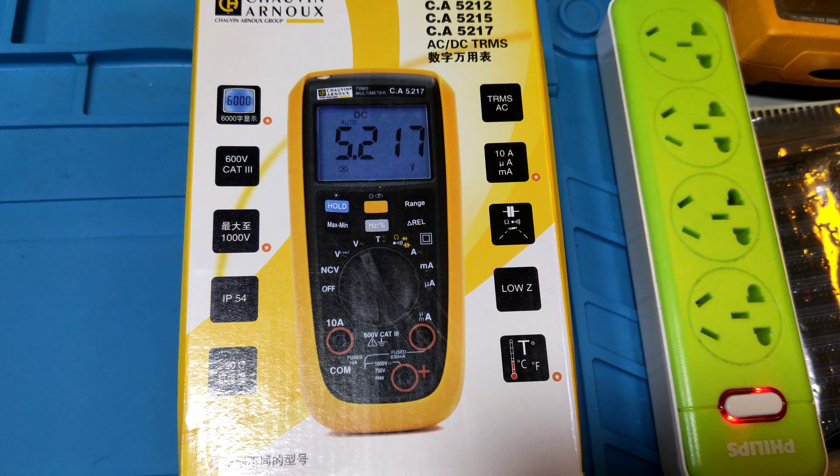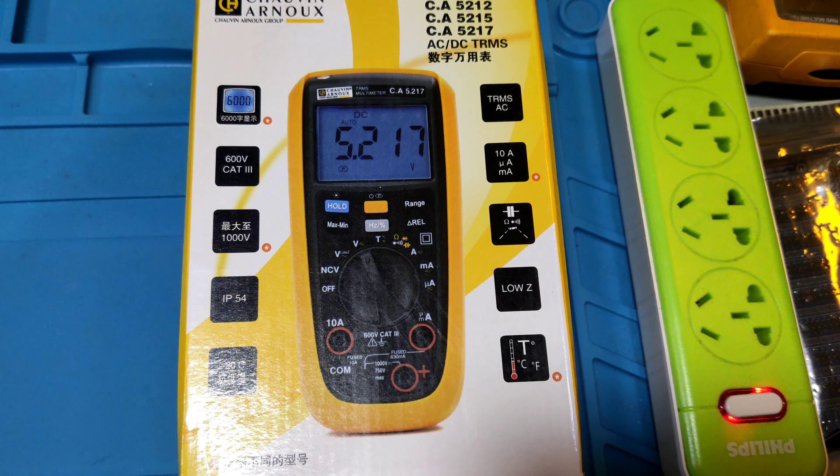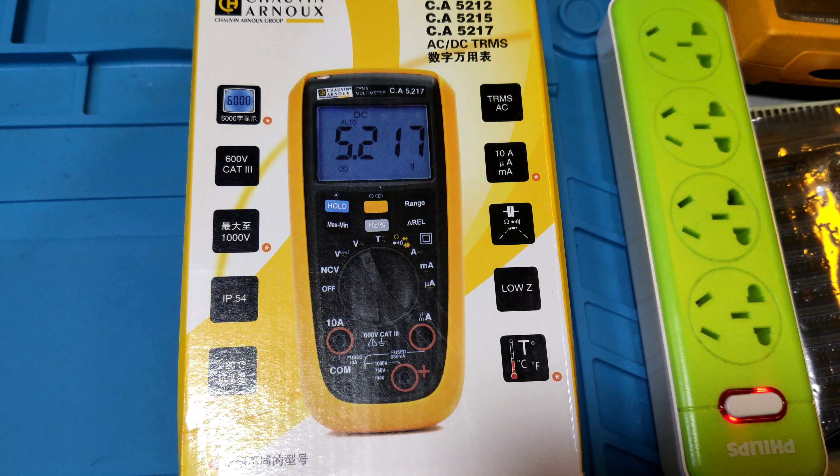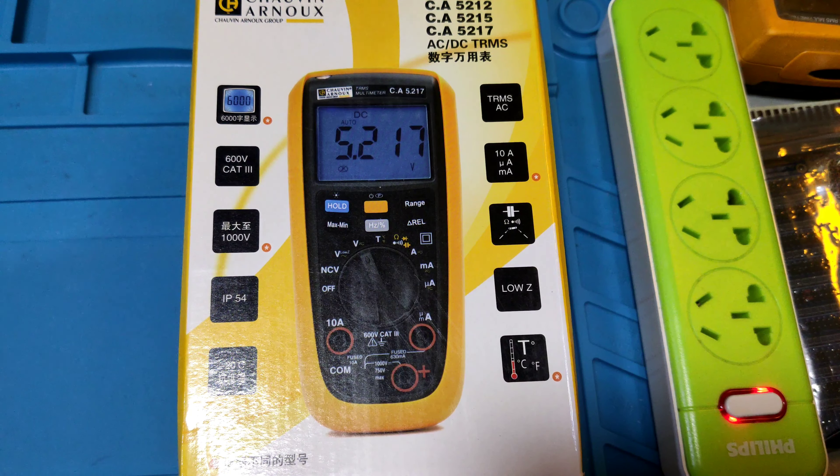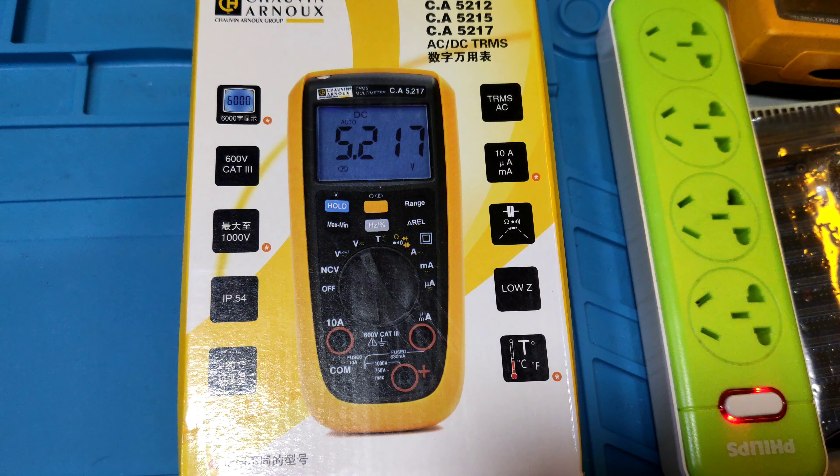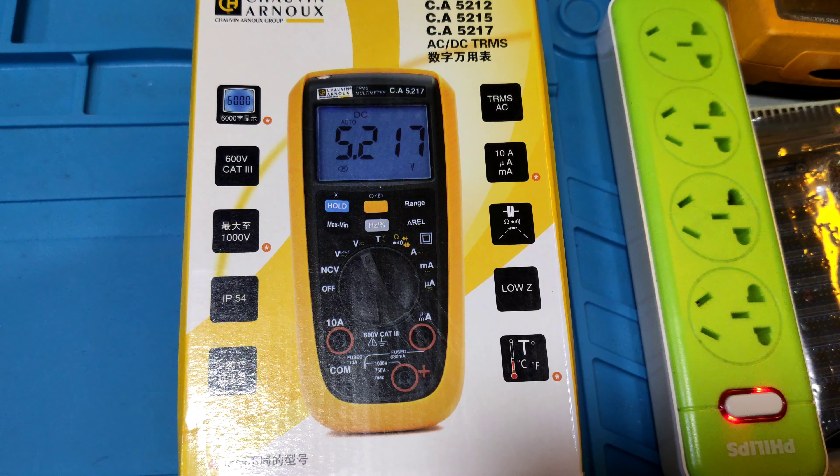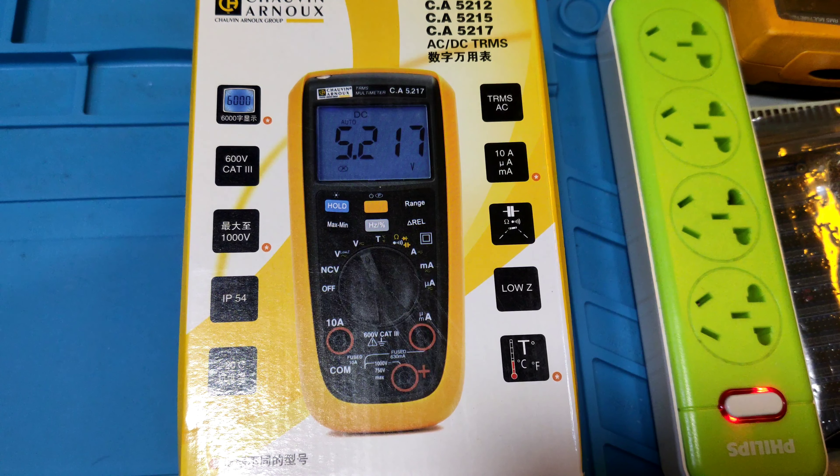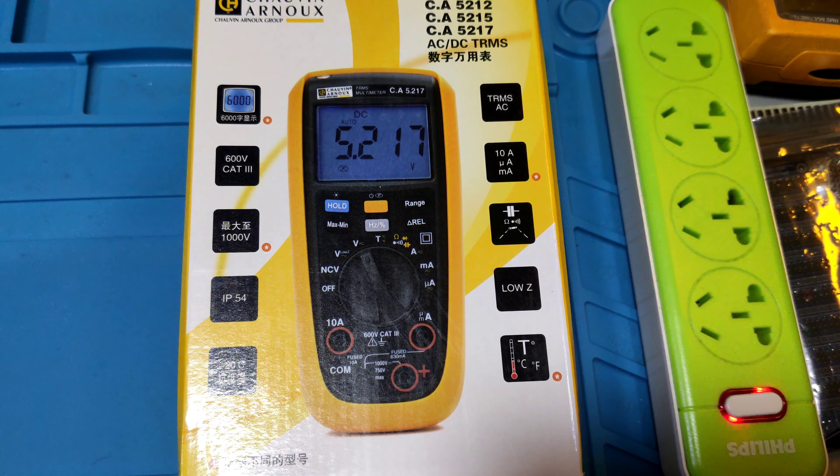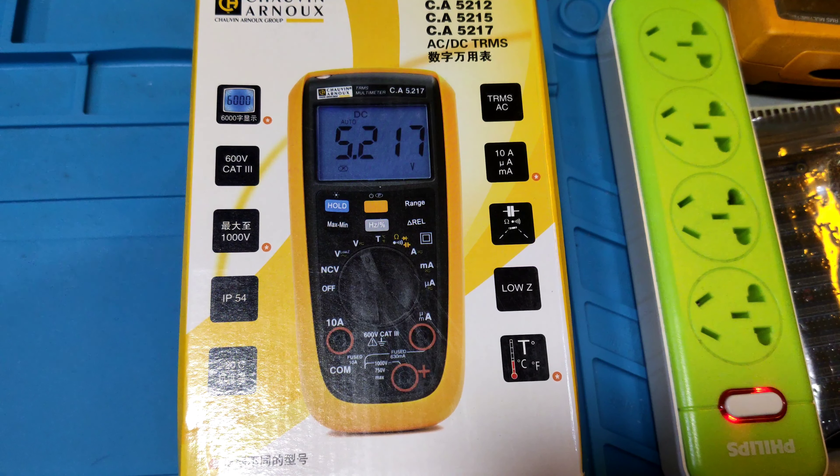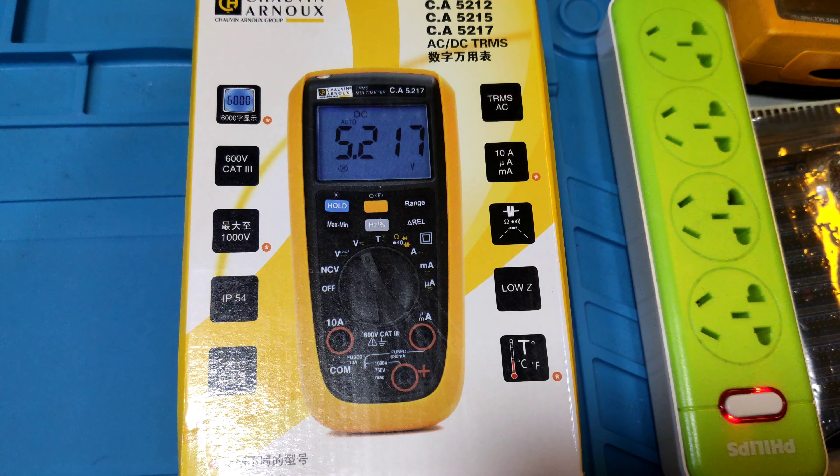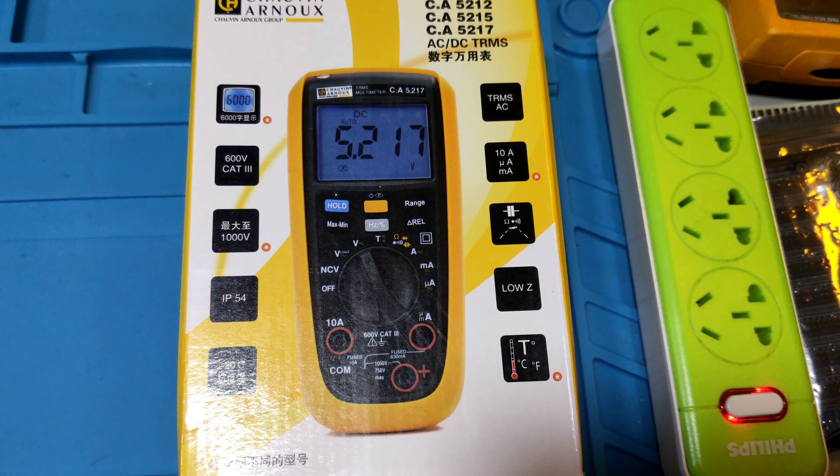AC current is 0.01mA to 6000mA. DC current is 0.01mA to 6000mA. AC microamps is 0.01μA to 600μA. DC microamps is 0.01μA to 600μA. AC amps is 0.001A to 10A. DC amps is 0.001A to 10A.